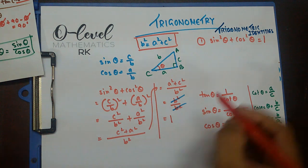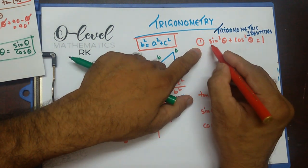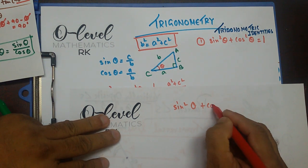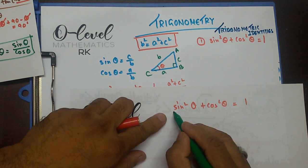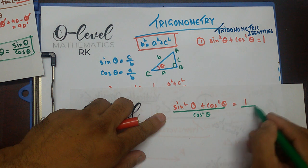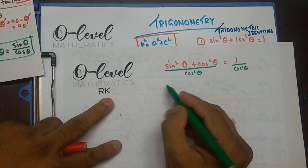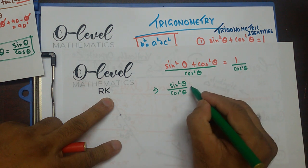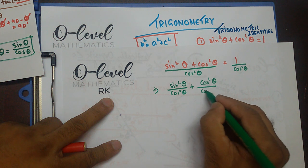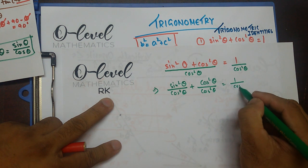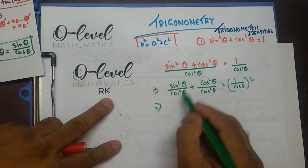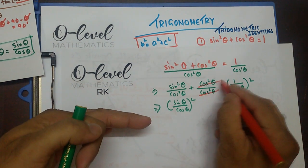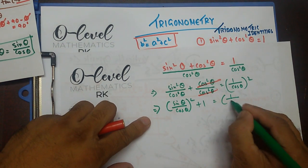Now I'm going to take sin squared theta plus cos squared theta equals 1, and divide both sides by cos squared theta. The distributive law of division tells me that when I distribute the cos squared theta denominator: sin squared theta divided by cos squared theta plus cos squared theta divided by cos squared theta equals 1 by cos squared theta. Now sin squared theta over cos squared theta can be written as (sin theta by cos theta) whole squared, and the cos squared terms cross out to give 1. And the right side is (1 by cos theta) squared.